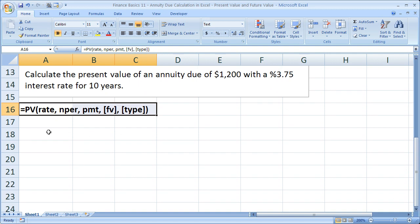Okay, so let's take a look at the problem we've got here. This is probably a little bit more similar to something you might read if you're taking a test. Calculate the present value of an annuity due of $1,200 with a 3.75% interest rate for 10 years.